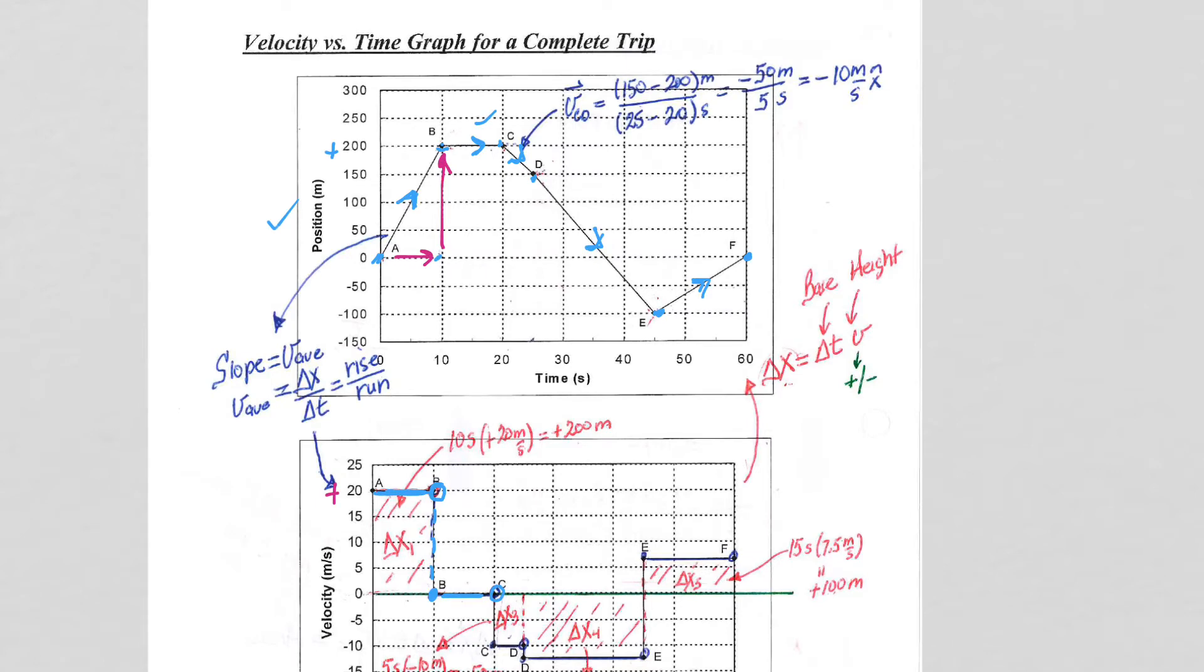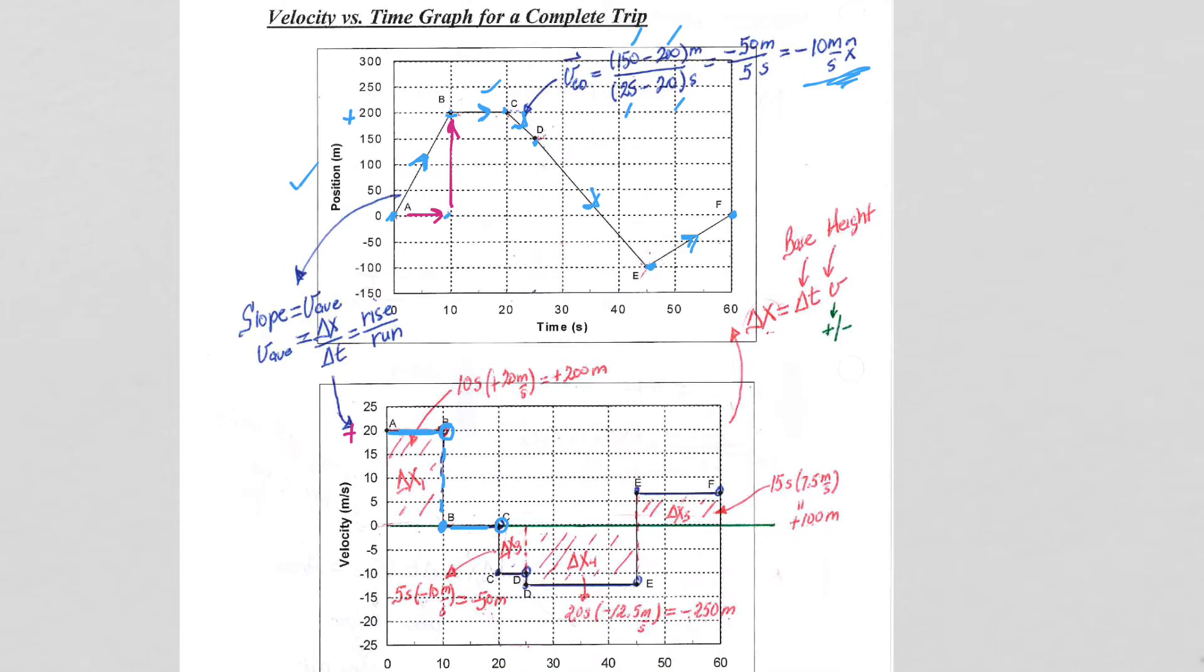Again, rise, which in this case is a fall, so it's final minus initial over T final minus T initial, so negative 10 meters per second. We plot that from C to D because the velocity itself is not changing over any interval from 20 to 25. So whether it's 20 to 21 or 21 to 22, it remains at negative 10, and so forth.